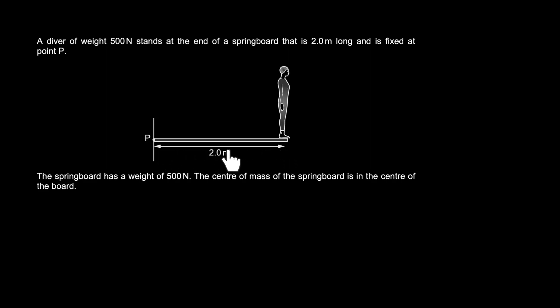So far we've neglected the weight of the bar itself. In this particular case we can't really ignore it. A diver of weight 500 Newtons stands at the end of a springboard that's 2 meters long and fixed at point P. So the pivot is over here. He's generating a force over here. However, the springboard has a weight of 500 Newtons as well, so there are two forces acting on it. Any body's weight acts or is approximated to act on its center of mass. The center of mass of this board will be exactly at the 1 meter mark.